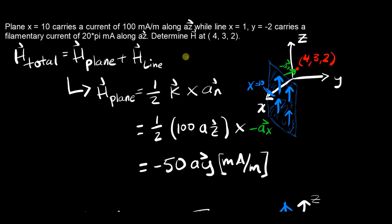So here is a Biot-Savart law problem where you have an infinite plane at x equals 10 carrying a surface current density of 100 mA per meter along the az direction, and you also have a line described by x equals 1, y equals negative 2, which is carrying its own current also in the az direction. The question asks you to find the magnetic field density H at a specific point, 432.